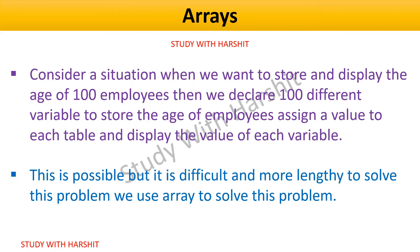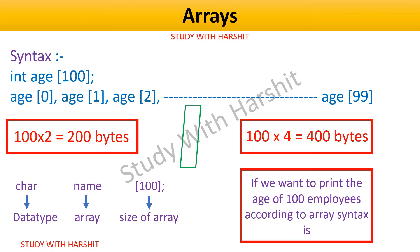To solve this problem we use an array. The syntax would be: int h[100], with elements from h[0] to h[99]. If the compiler uses two bytes per element, then 200 bytes of storage are required; if the compiler uses four bytes, then 100 employees' ages would require 400 bytes.